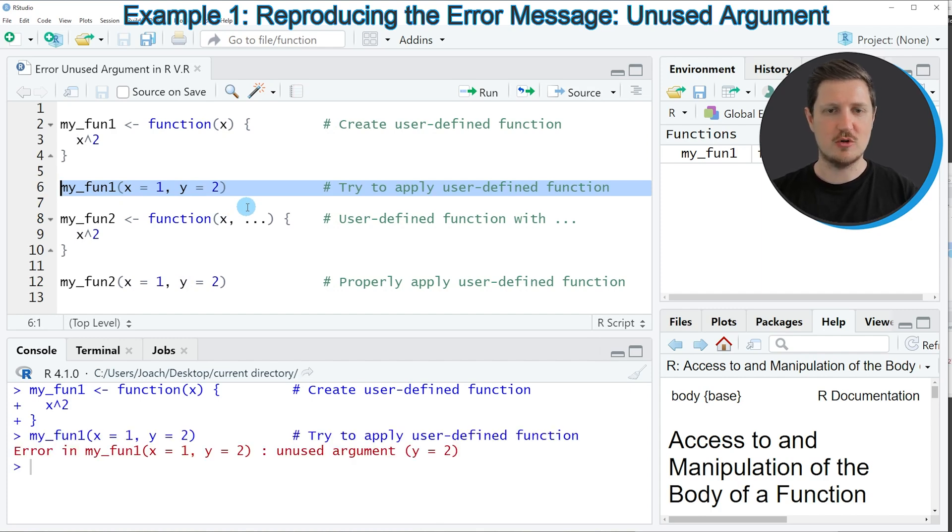If you run this line of code, you can see at the bottom that the error message error in myfun unused argument y equals to 2 is returned. The reason for that is that our user-defined function only takes the input value x but not the input value y.